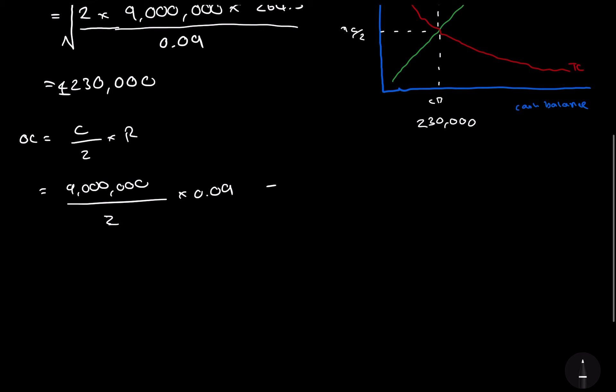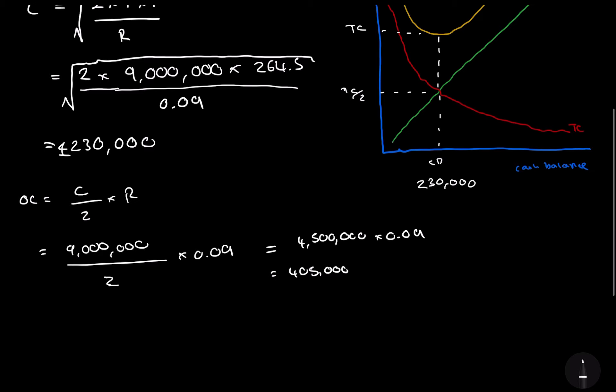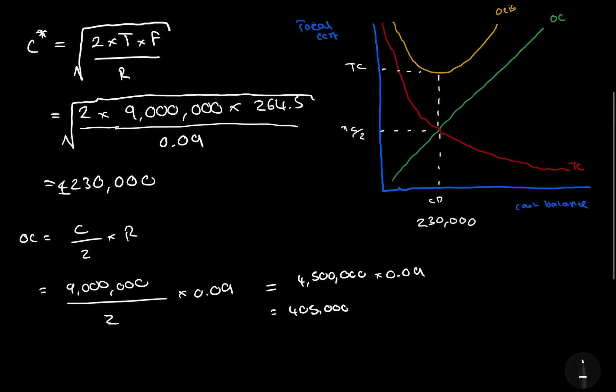So I'm going to try and do this in my head. 4.5 million times 0.09. So 10% is 450,000. I may need a calculator for this. 4.5 million times 0.09 is going to equal 405,000. That's the cost. And that will go in here, 405,000.